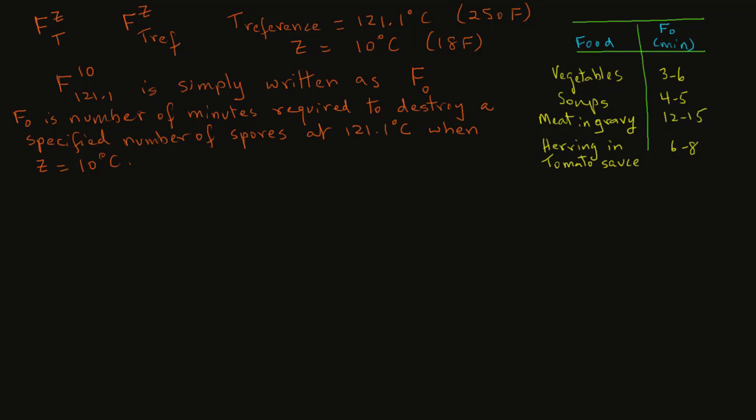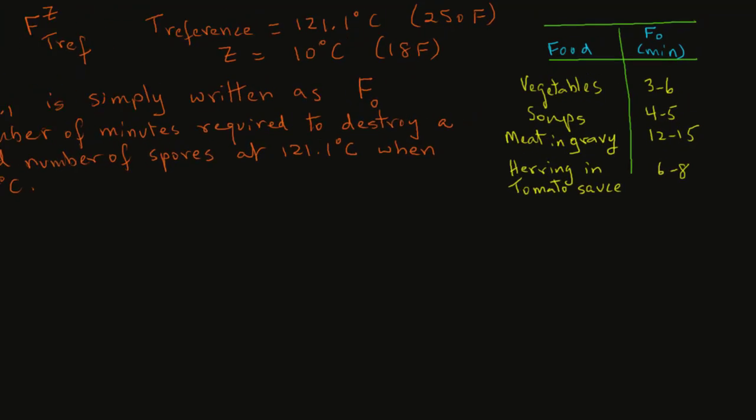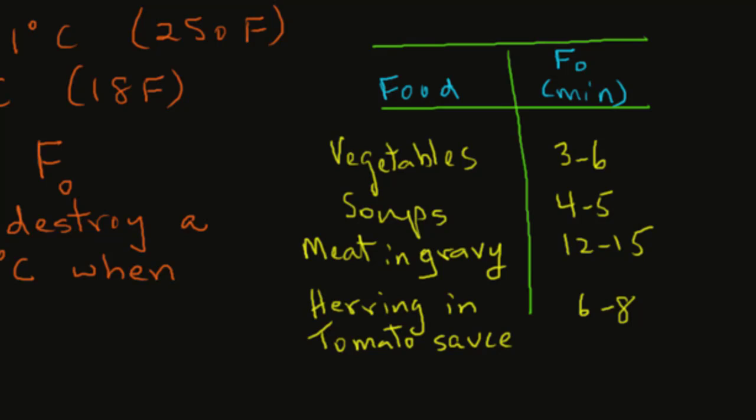The values for F0 that are commercially used are shown in this table, where we note that for vegetables a typical F0 value is 3 to 6 minutes. In other words, at 121.1 degrees C and a z value of 10 degrees C, the F value will be between 3 and 6 minutes. For soups, the value is between 4 to 5 minutes. For meats in gravy, you require a much higher F0 value, 12 to 15 minutes. And another product, herring fish in tomato sauce, the F0 value is between 6 and 8 minutes.